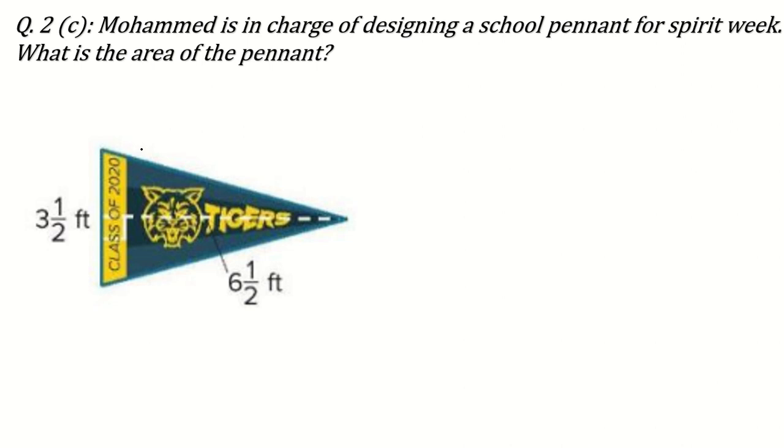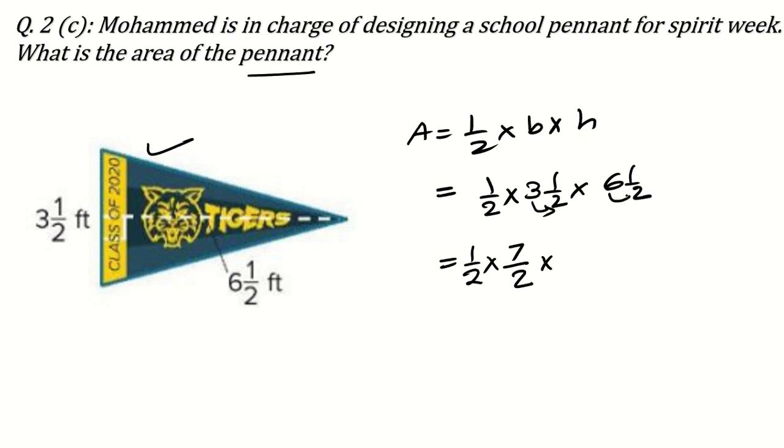Now this type of question: Muhammad is in charge of designing a school pennant for spirit week. What is the area of the pennant? So this complete design, we have to find the area. Area is equal to half times base times height. My dear students, don't be lazy in writing the formula. Every time you write the formula so that you can memorize it. Half times base is 3 and a half and height is 6 and a half. So we will convert this mixed fraction into improper fraction. So this is 3 times 2, 6, and 6 plus 1, 7 divided by 2. Same here, 6 times 2, 12, and 12 plus 1, 13 divided by 2. Now, it cannot be simplified because numerator both are prime numbers. So it cannot be cancelled. So 13 times 7, 91 divided by 8.